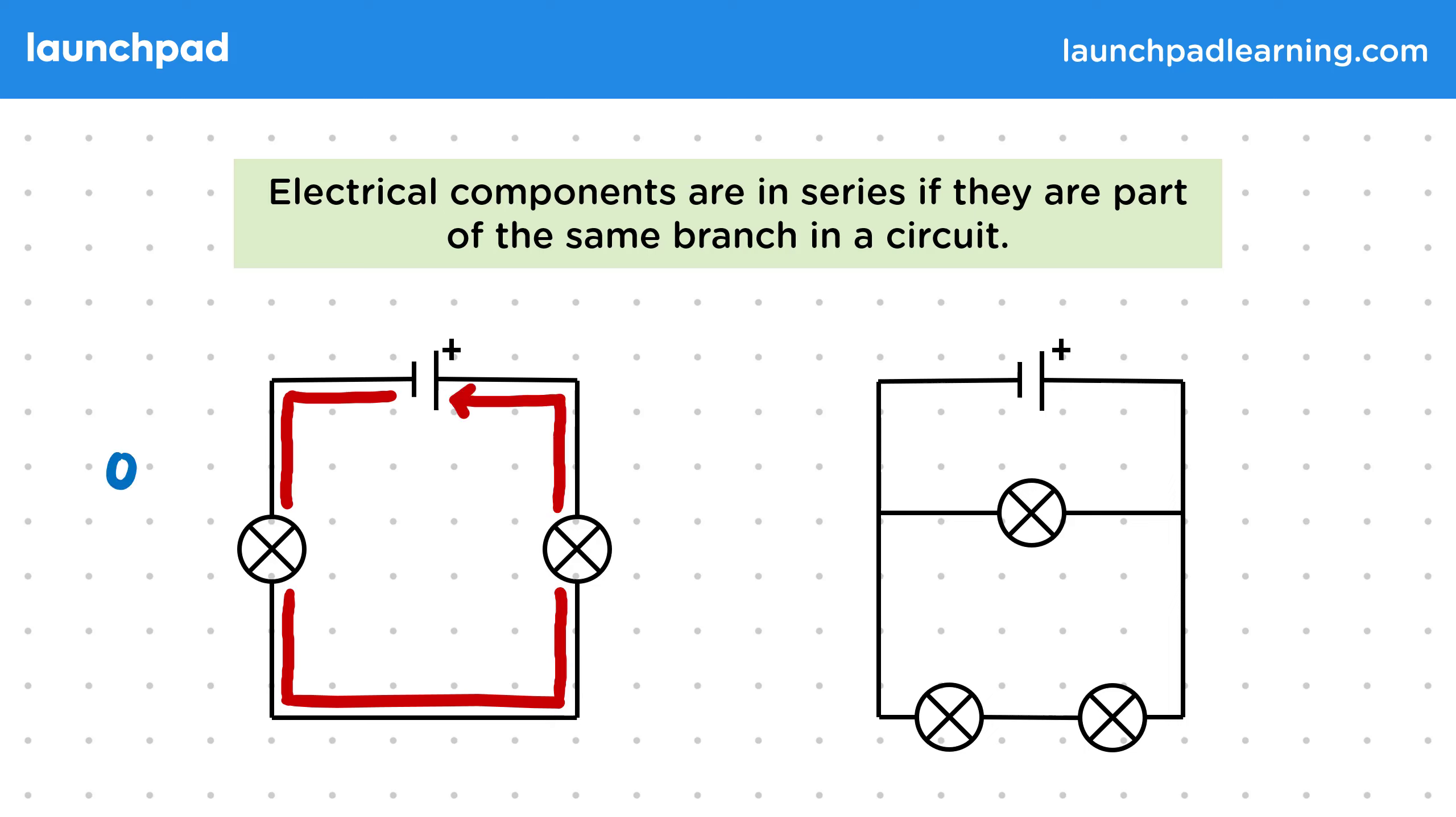It also means there is only one loop around the circuit and so you can't travel round it without passing through both lamps. This means both lamps must be in series.